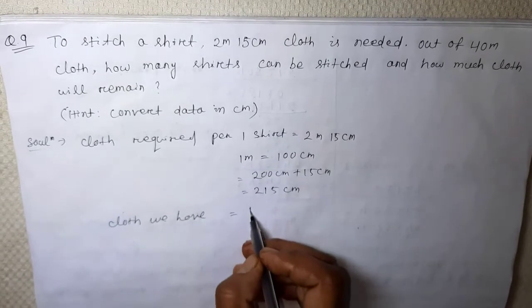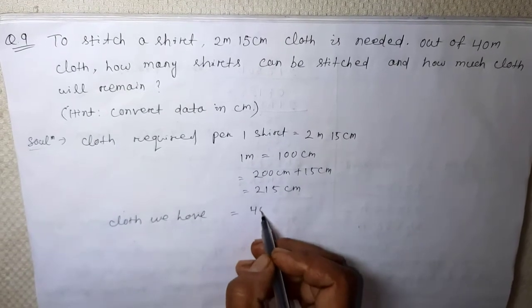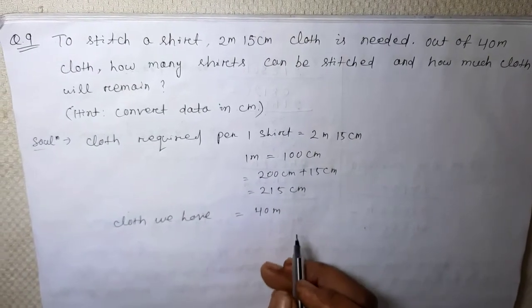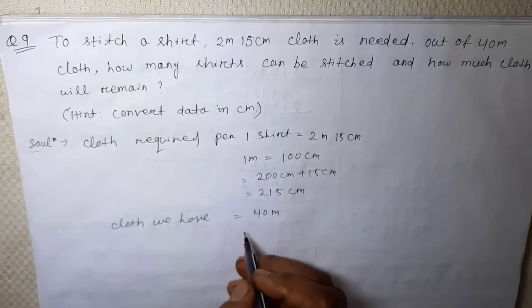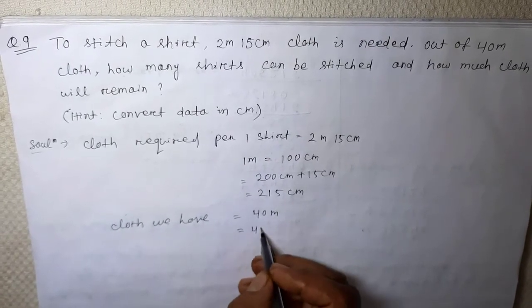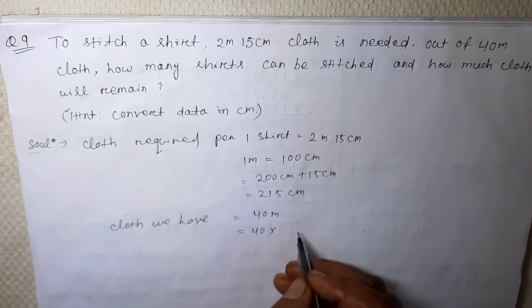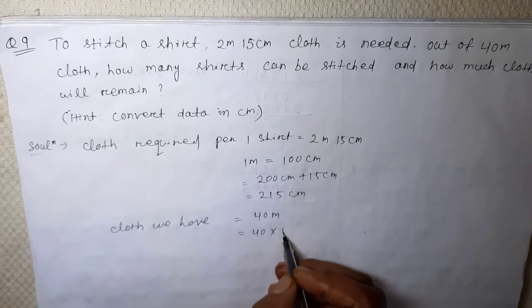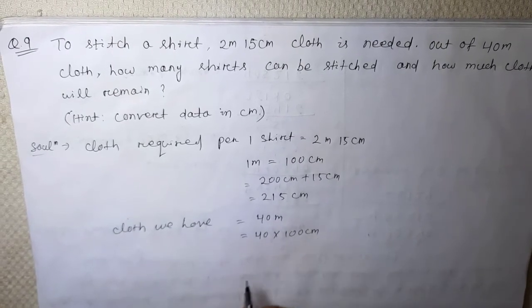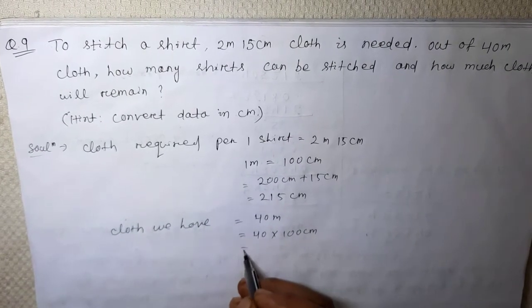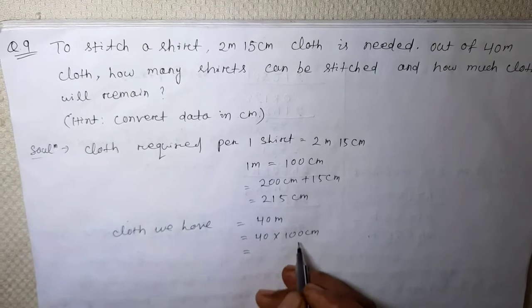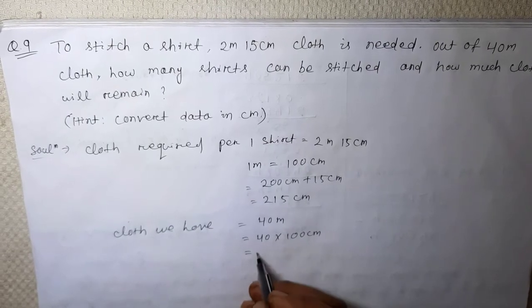40 meter — convert 40 meter into centimeter: 40 multiplied by 100 equals 4000 centimeter.